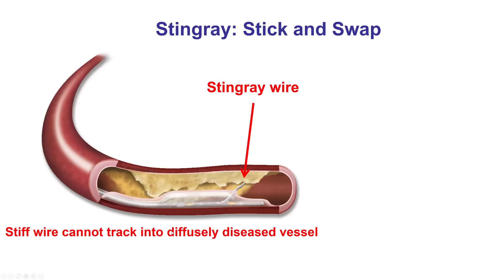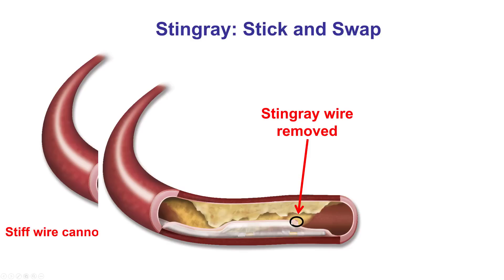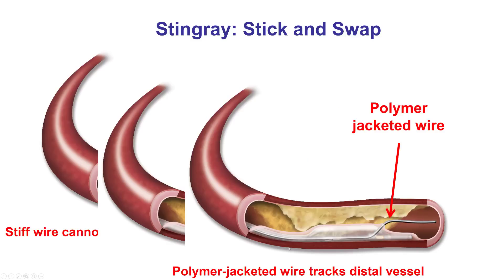However, one of the challenges using stiff wires is that they can cause dissection or go through-and-through, which is why in the majority of cases the stick-and-swap technique is currently used. The basic principle is advancing the Stingray balloon, then a stiff guide wire is advanced to create an exit port. This is then removed, and a polymer-jacketed wire — typically a Pilot 200 — is advanced to find the true lumen distally without causing dissections or other problems.